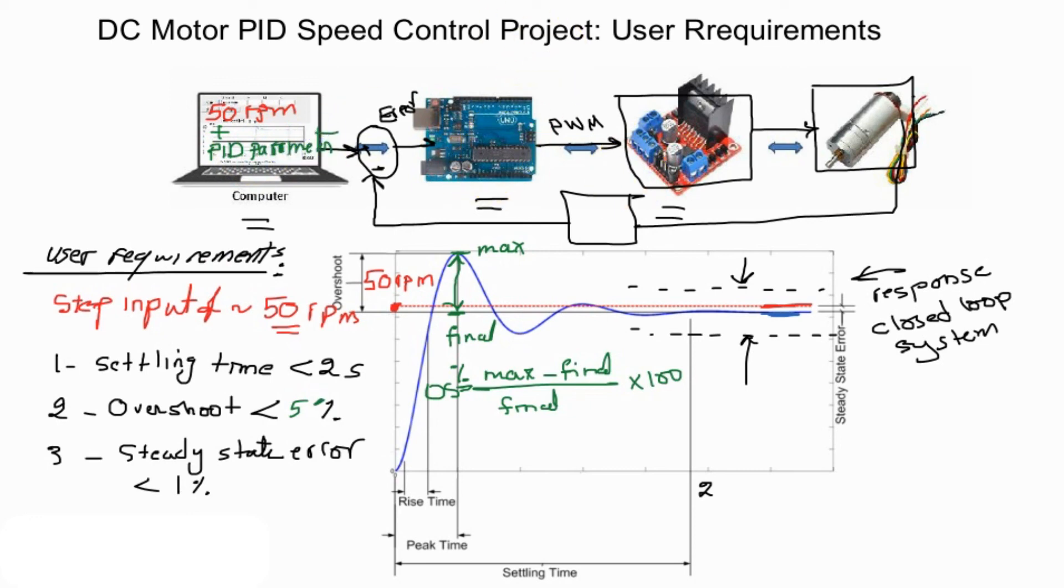And this will be discussed in more details in later sessions. Also note that your feedback sensor which is the encoder fitted at the back of your DC motor will be discussed in further details later on.